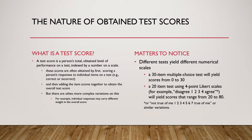Scores are usually obtained as the test scorer looks through individual items — individual responses to items on the test — and scores them, like how many are correct or incorrect, and then adds them together. But there are other more complex variations on this; for example, individual responses can carry different weights.